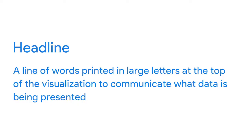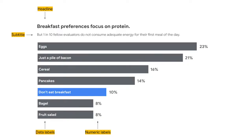One of the easiest ways to highlight key data in your data viz is through headlines. A headline is a line of words printed in large letters at the top of the visualization to communicate what data is being presented — it's the attention grabber that makes your audience want to read more. A chart without a headline is like a report without a title. Be sure to use clear, concise language, explaining all information as plainly as possible. Try to avoid using abbreviations or acronyms, even if you think they're common knowledge. The typography and placement of the headline is important too — keep it simple, make it bold or a few sizes larger than the rest of the text, and place it directly above the chart.